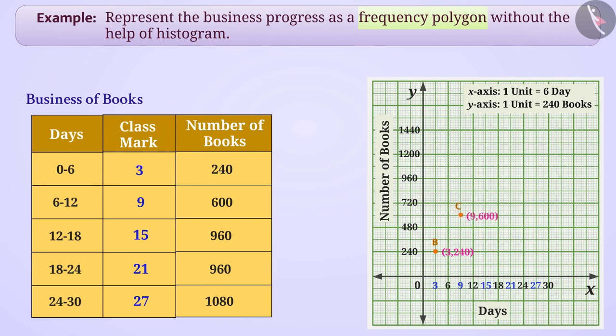C, 9 and 600; D, 15 and 960; E, 21 and 960; and F, 27 and 1080 respectively. After this, we will connect all the points to complete the frequency polygon.